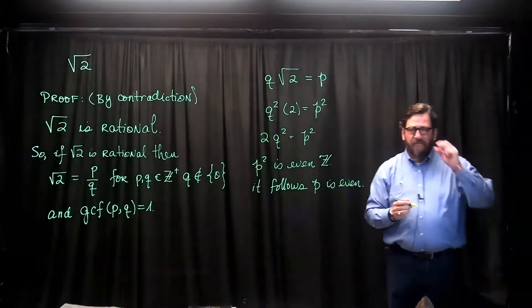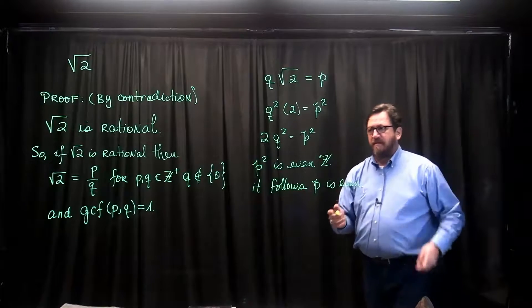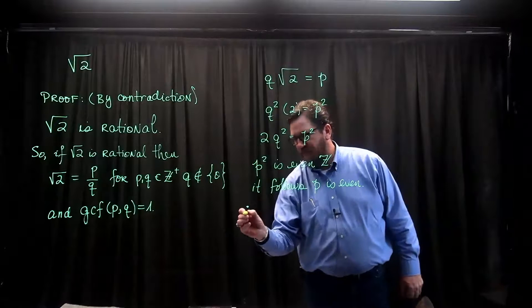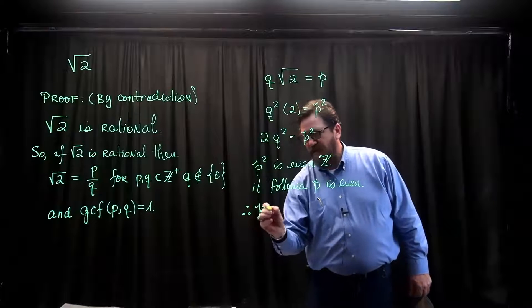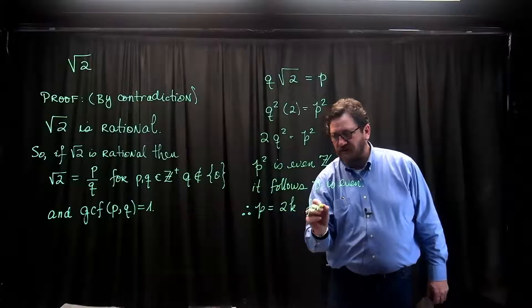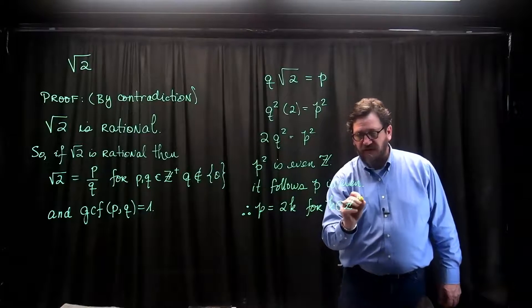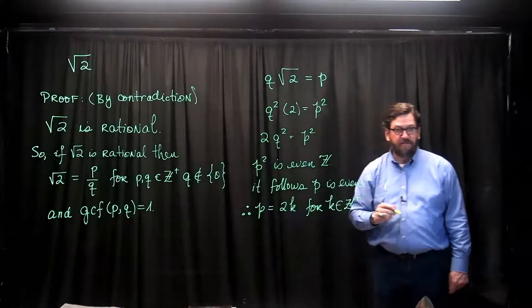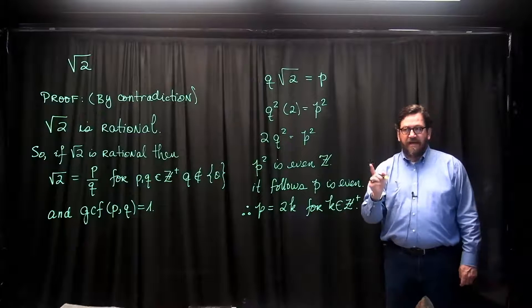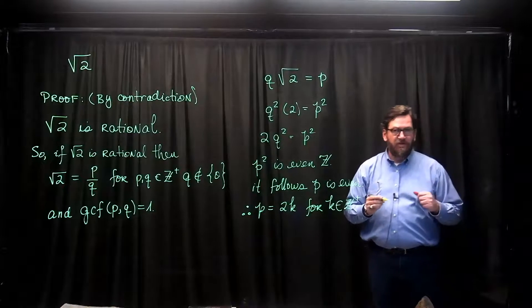Now if p is even, we know the definition of even is p equals 2k for some k, an element of, in this case, the positive integers, since p is positive. So that means we can substitute for p this value 2k, and I'm going to do that.